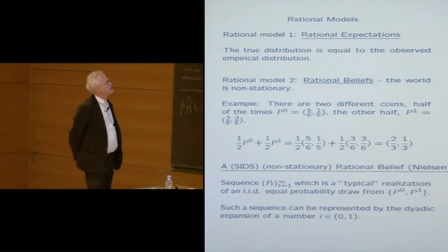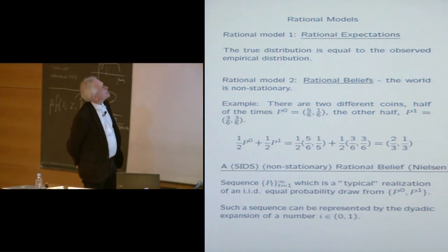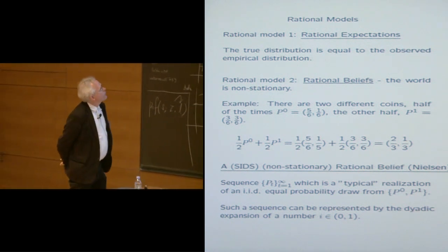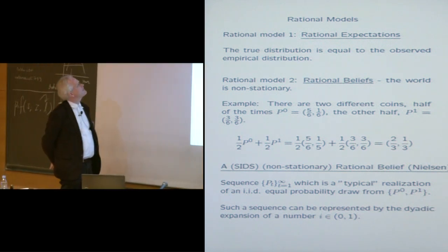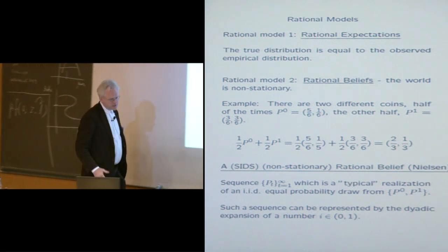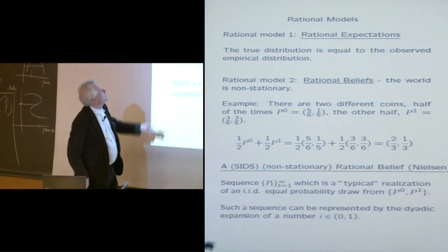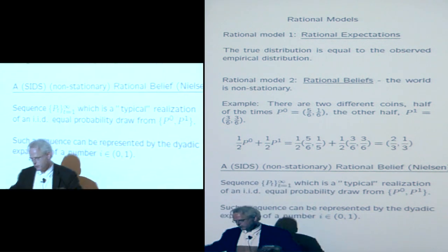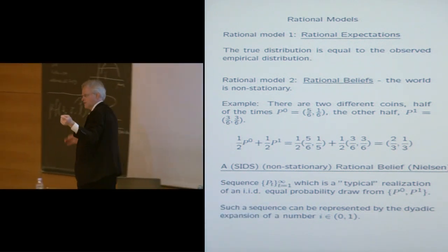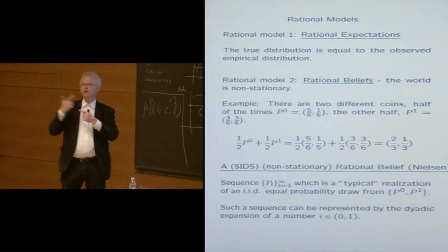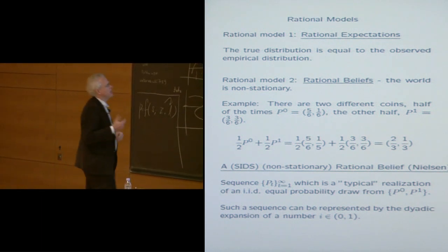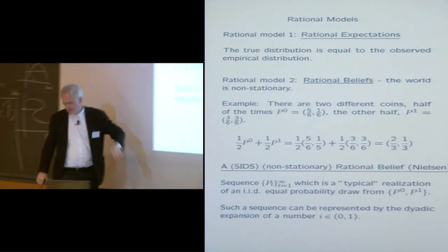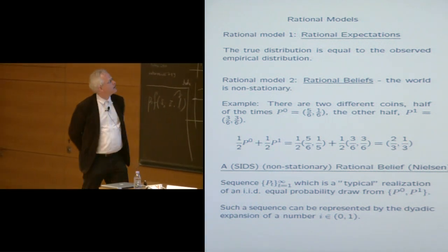Another rational model is to believe that the world is non-stationary, and one example would be that there are actually two coins in play. In our simple example, half of the times, the coin is five-sixths probability of heads, the other half of the times is three-sixths. And the rationality condition, what Mordecai now has called rationalizability, is that on average, if you play these coins, and they have to be distributed in a very unsystematic way, then the empirical distribution they will generate will exactly be the one that is known by everyone. So this is another rational model.